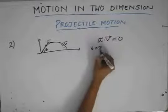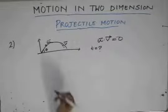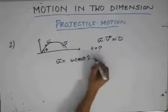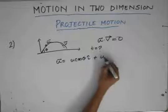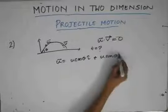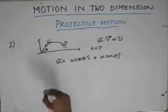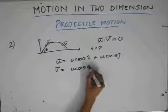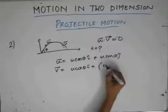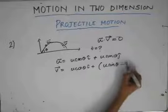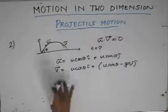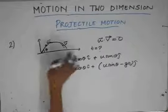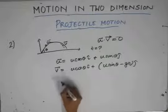We need to find the time. The initial velocity vector is given by u·cosθ times i plus u·sinθ times j. Now, if I take the dot product of these two vectors, that should be equal to zero since the two velocity vectors are perpendicular to each other. Let's take the dot product.